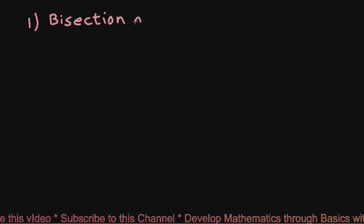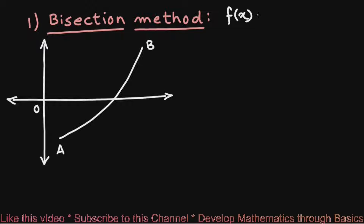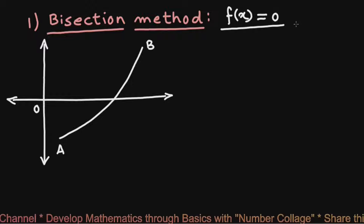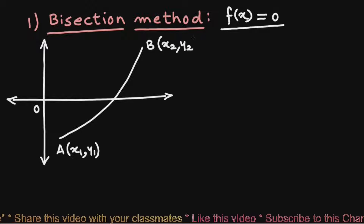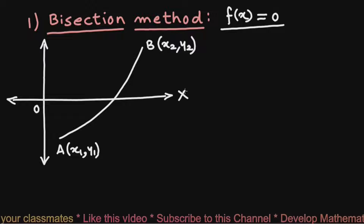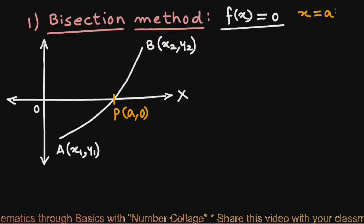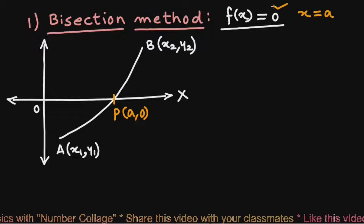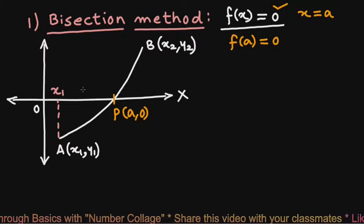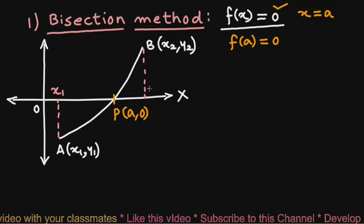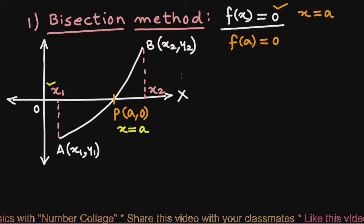The first method is the bisection method. In an x-y coordinate system, consider curve AB of polynomial function f(x), where f(x) = 0 is the algebraic equation to solve. Let the coordinates of point A be (x1, y1) and point B be (x2, y2). This curve f(x) cuts the x-axis at point P whose coordinates are (a, 0). So x = a is the solution of this algebraic equation, and f(a) = 0. The solution x = a lies between x1 and x2.